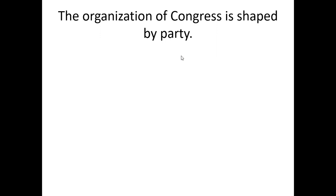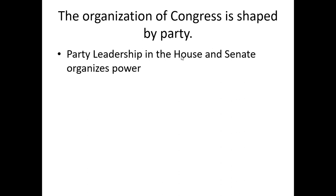The organization of Congress is shaped by party. To exercise the power to make law, Congress must first organize. The building blocks of congressional organization include the political parties, committee systems, congressional staff, caucuses or meetings of each party, and the parliamentary rules of the House and the Senate. Which party controls the majority of seats in which chamber determines the leadership.